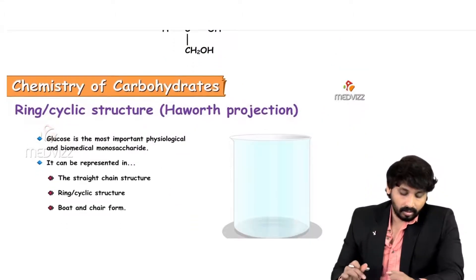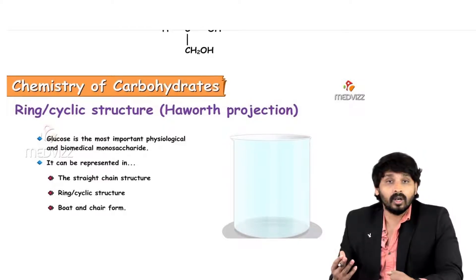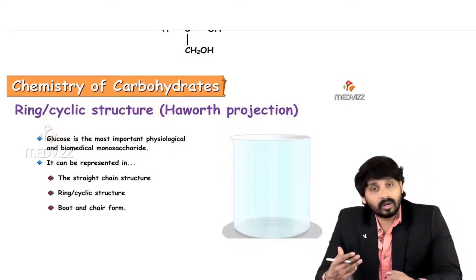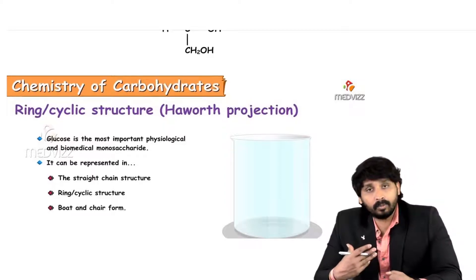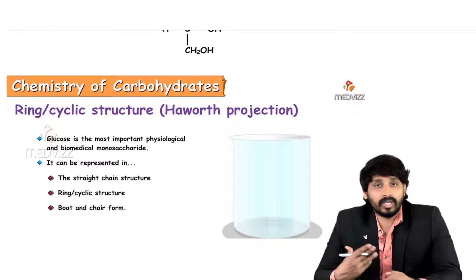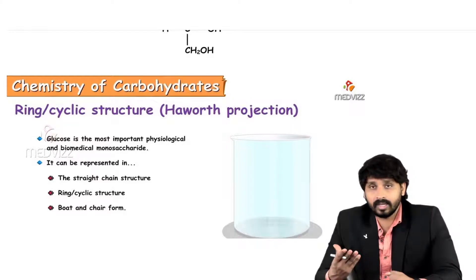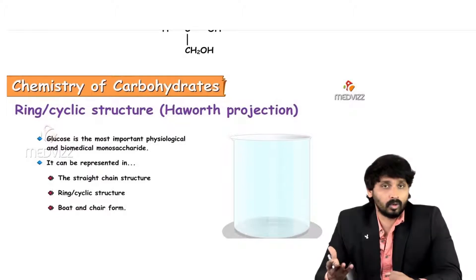Coming to the ring or cyclic structure, that is known as the Haworth projection formula. The straight chain was proposed by Emil Fischer, and the ring structure was proposed by Haworth — a scientist who proposed this ring structure form for glucose.